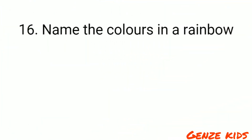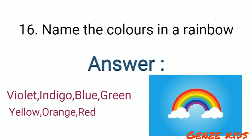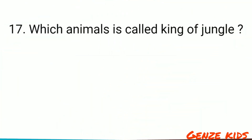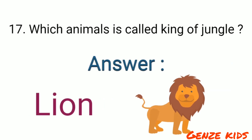Name the colors in a rainbow. Violet, indigo, blue, green, yellow, orange and red. Which animal is called king of the jungle? Lion.